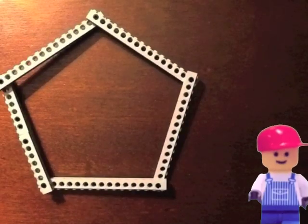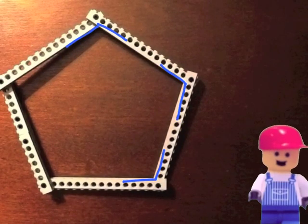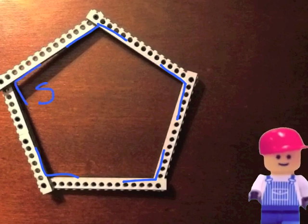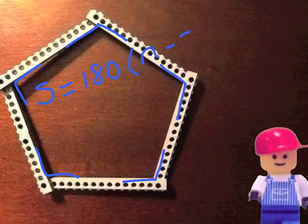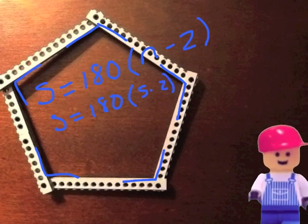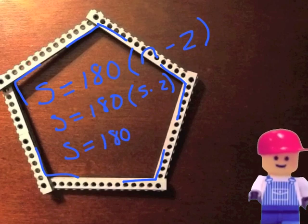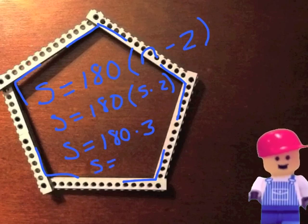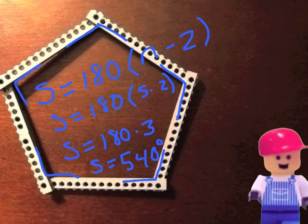A five-sided polygon is a pentagon. They have five sides and five interior angles. What do all five interior angles add up to? We can use our formula: S equals 180 times the quantity N minus 2. So S equals 180 times the quantity 5 minus 2. Order of operations says do 5 minus 2 first, giving us 180 times 3. The angles of a pentagon all add up to 540 degrees.